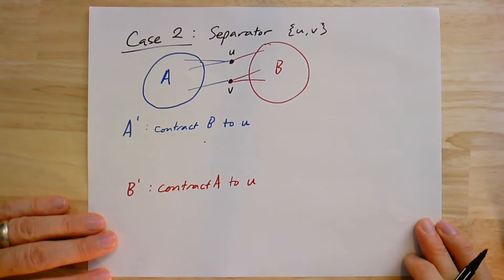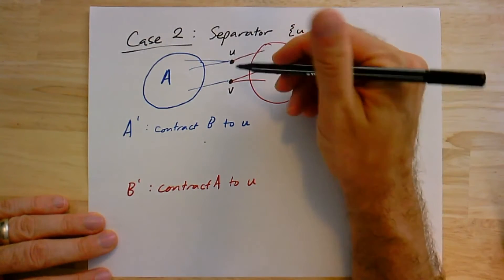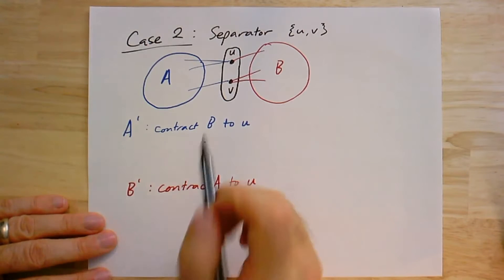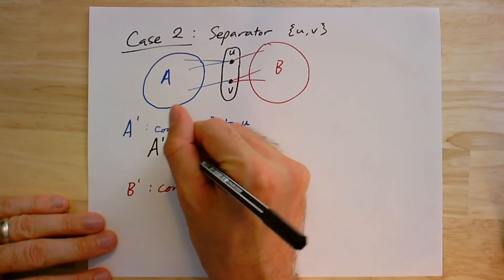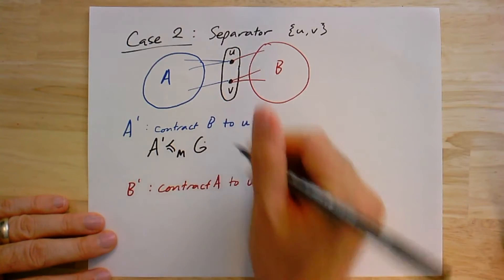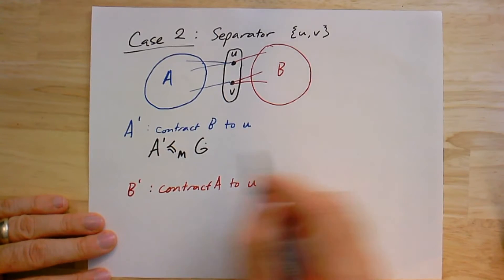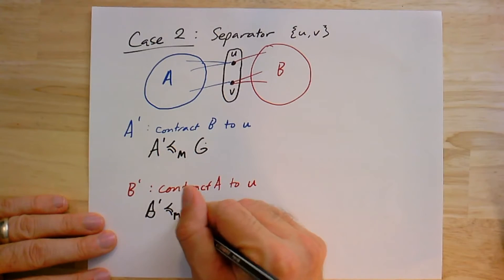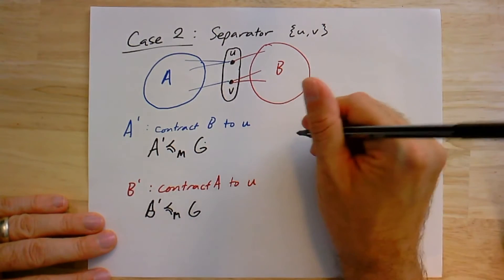We're almost there. We're just going to do this same proof now for the two-connected case. If G is two-connected but not three-connected, that means I can find this separator here of size two. As before, I take A prime as a minor of G. This A prime is a minor of G, and I formed it by contracting all of B to this one vertex U. And similarly, I have B prime is also a minor of G. I contract all of A to U to form B prime.